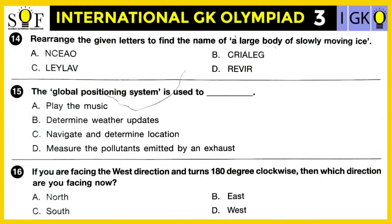Question number fourteen: Rearrange the given letters to find the name of a large body of slowly moving ice. The correct answer is option B — after rearranging the letters, the new word is glacier, which means a large body of moving ice.